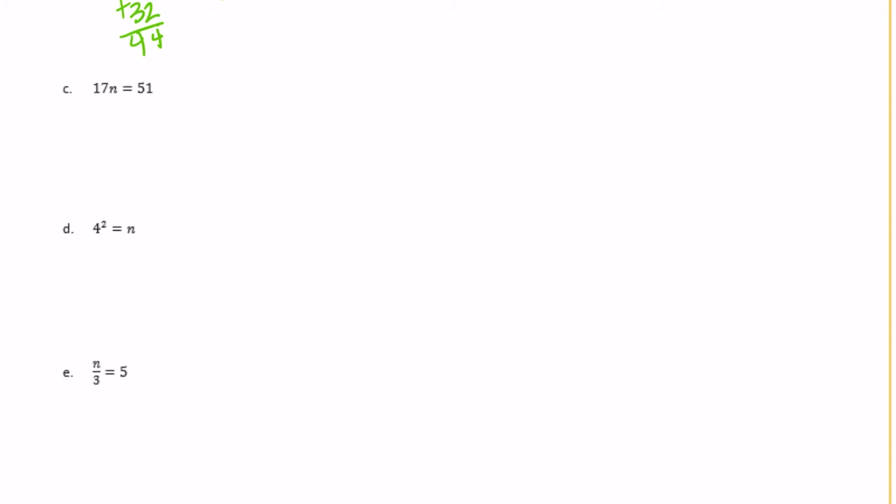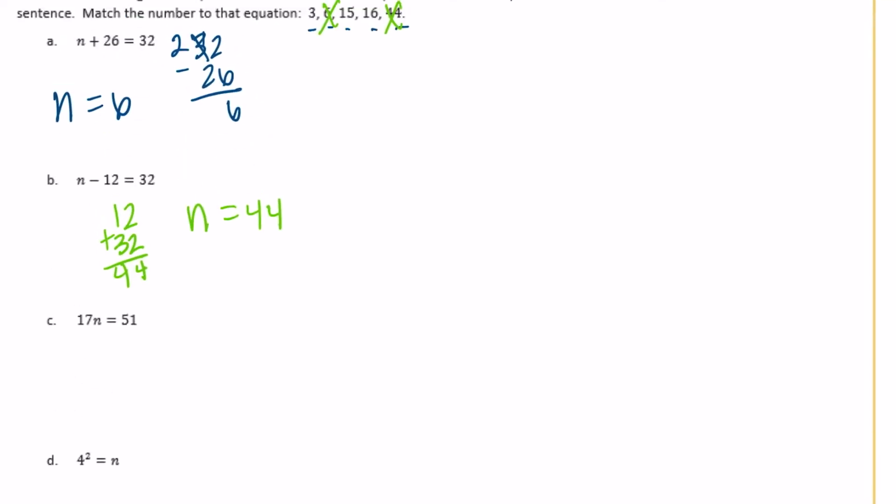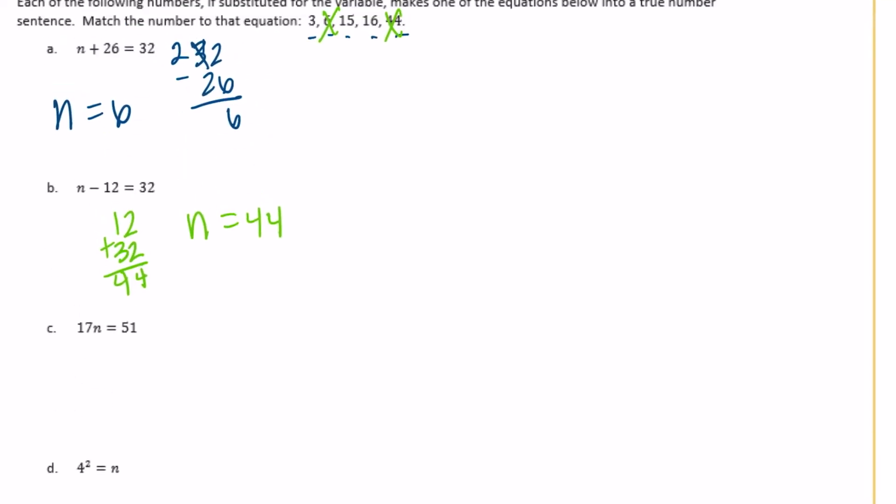17 times N equals 51. So 51 is equal to 17 times what? Well, I don't know exactly off the top of my head, but if I'm looking at my options here, it needs to be either 3, 15 or 16. And the only one that even makes sense is 3. Because 17 times 15 or 17 times 16 would be way more than 51. So let's just double check to make sure that 17 times 3 is 51. So 3 times 7 is 21. 3 times 1 is 3 plus 2 is 51. So that's true. So N must equal 3.